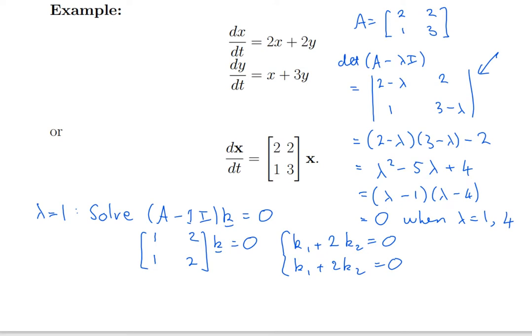So, I don't need the general solution, I just need one solution. So, I'm going to choose k2 equals 1. Substitute into the first equation, I get k1 is negative 2k2, that's negative 2. So, my first eigenvector is negative 2, 1.